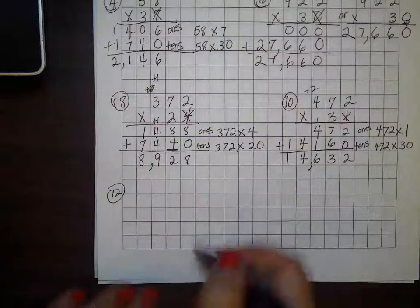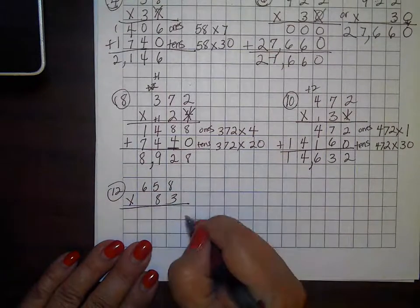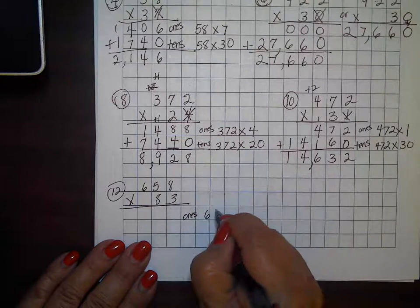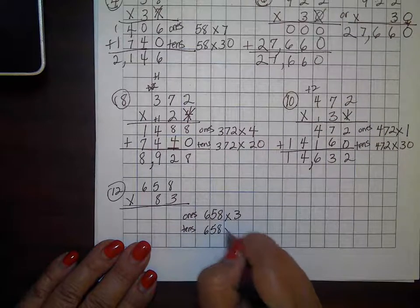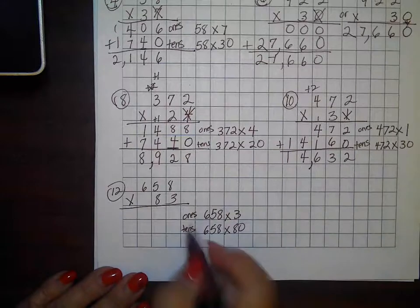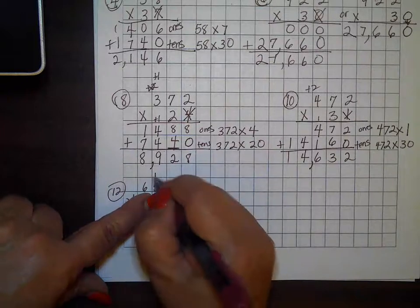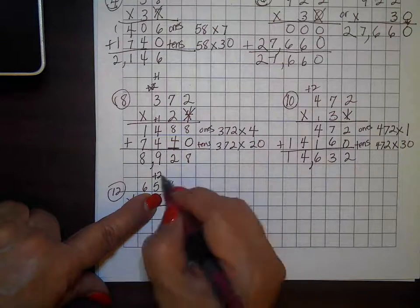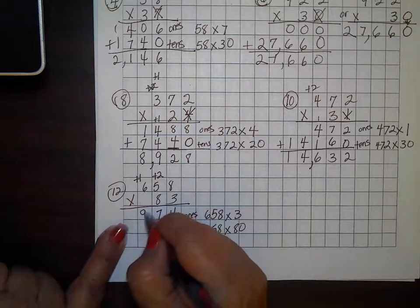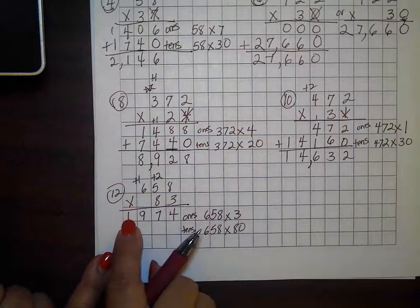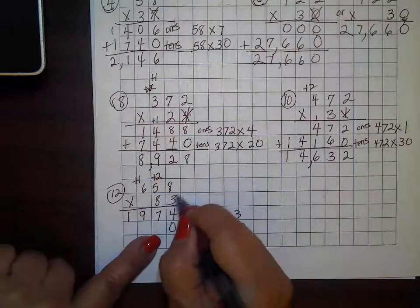Number twelve is 658 times 83. For the ones, this is 658 times 3; for the tens, it's 658 times 80. Covering the 8: three times 8 equals 24, regroup; three times 5 equals 15, plus 2 equals 17, regroup; three times 6 is 18, plus 1 equals 19. So 658 times 3 is 1,974 — bring down my zero, cross out my 3.